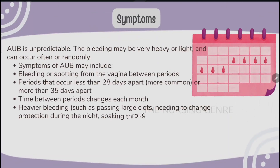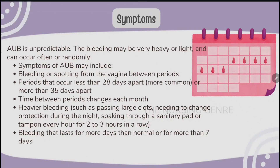Next, the symptoms of abnormal uterine bleeding. Abnormal uterine bleeding symptoms are unpredictable. The bleeding may be very heavy or light and can occur often or randomly. Symptoms may include bleeding or spotting between periods.